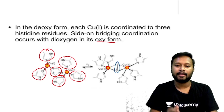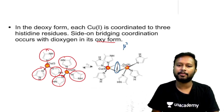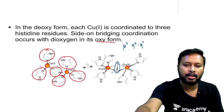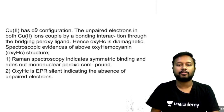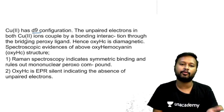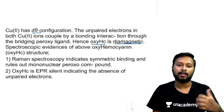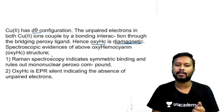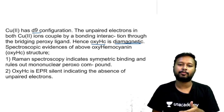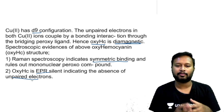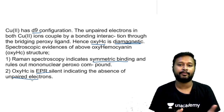Since Cu²⁺ has a d⁹ configuration, the unpaired electrons on both coppers are coupled through the bridging peroxy ligand, making oxy-hemocyanin diamagnetic. Spectroscopic evidence: Raman spectroscopy indicates symmetric binding, and oxy-hemocyanin is EPR-silent, confirming it is diamagnetic with no unpaired electrons.